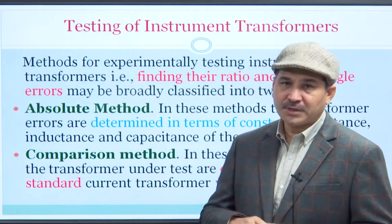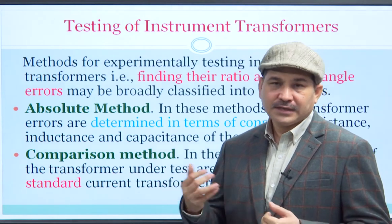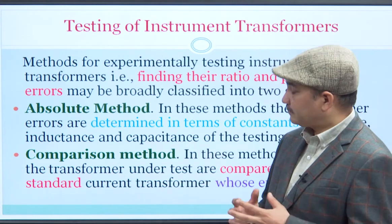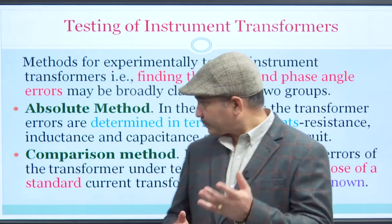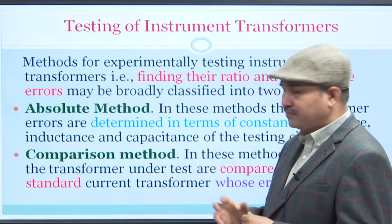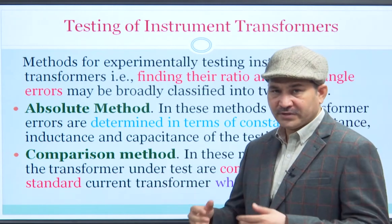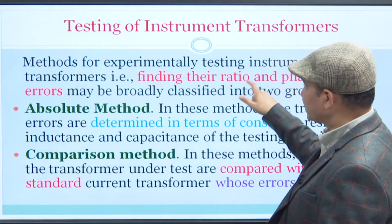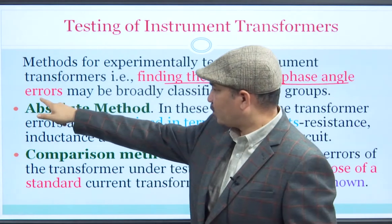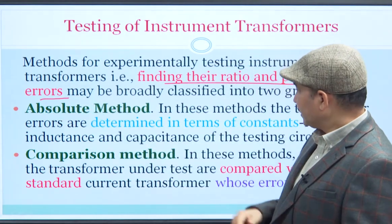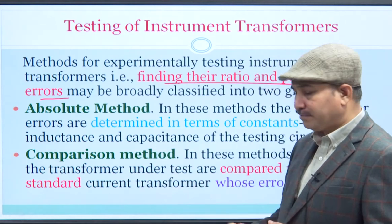Using different testing methods, you can identify errors in an instrument — like ratio error or phase angle error. Broadly speaking, there are two types of testing: one is absolute testing and another is comparison testing, which we discussed briefly in the last session. Today we will discuss them in a little more detail. Methods for experimentally testing instrument transformers — finding their ratio and phase angle error — that is the whole purpose of testing. It can be broadly classified into two groups: absolute method testing and comparison method testing.